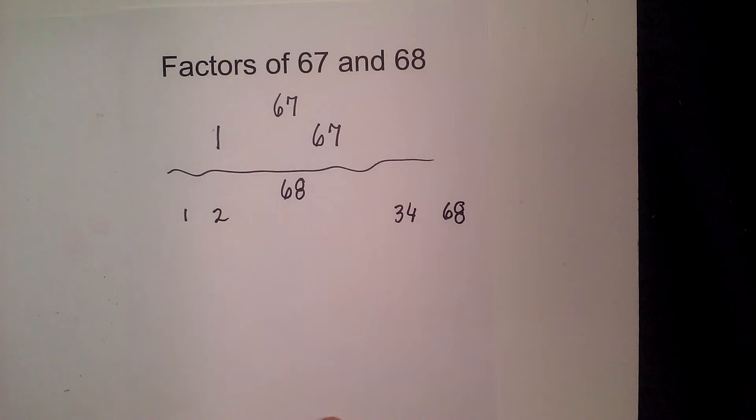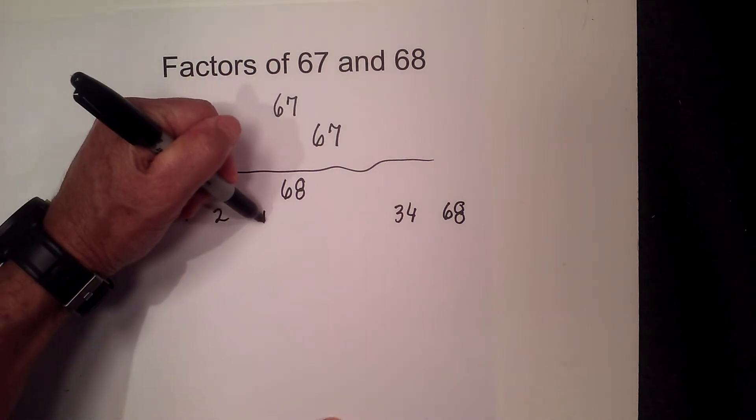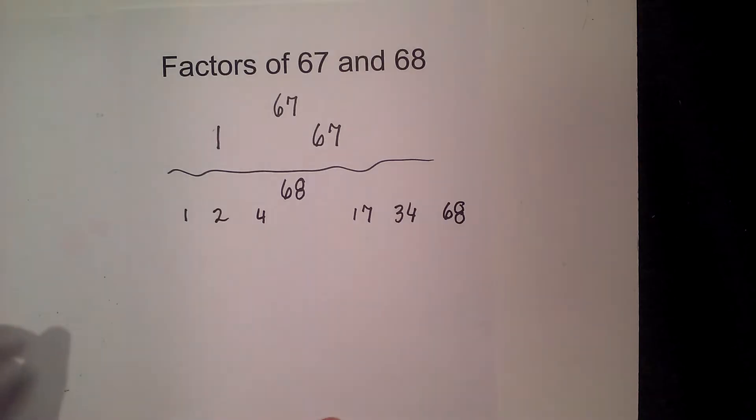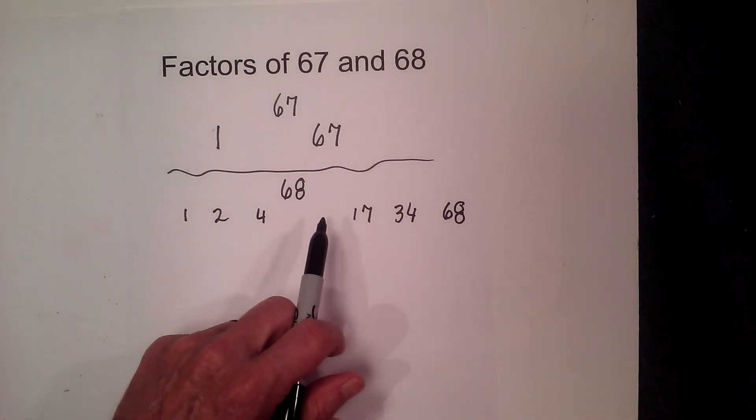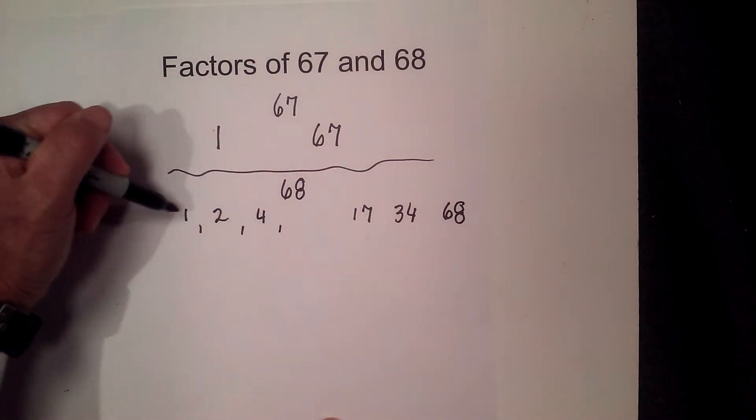equals 68, and then 4 times 17. Then 5, 6, 7, 8, 9, 10, 11, 12, 13, 14, 15, and 16 all do not go into 68, so the factors are 1,